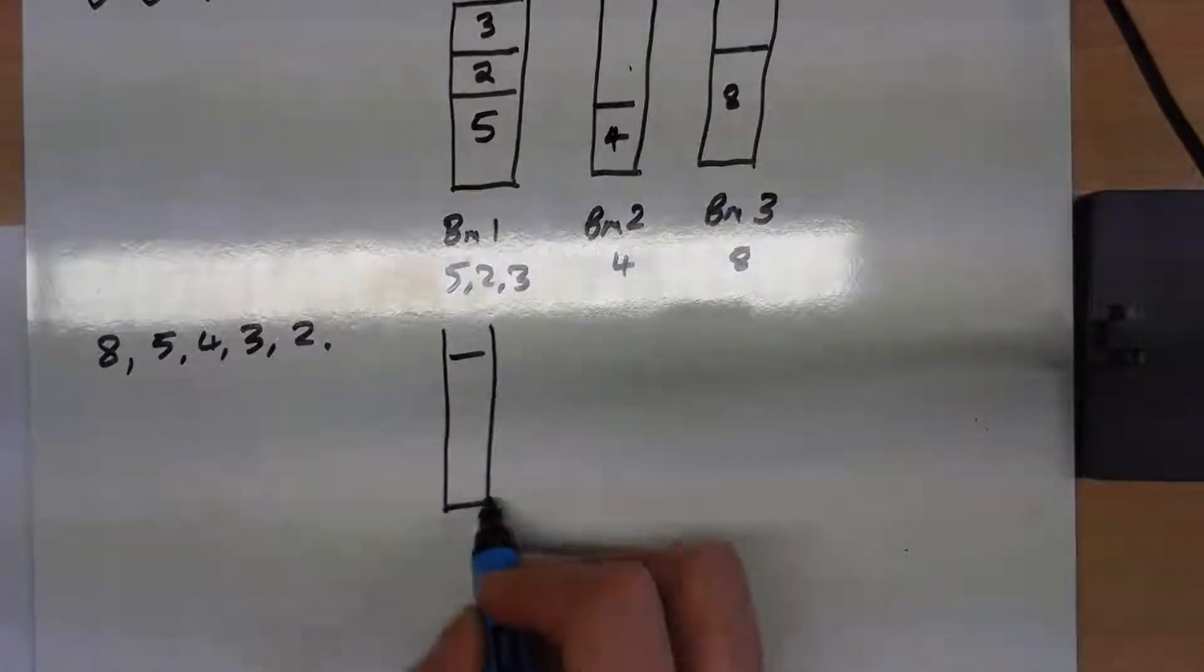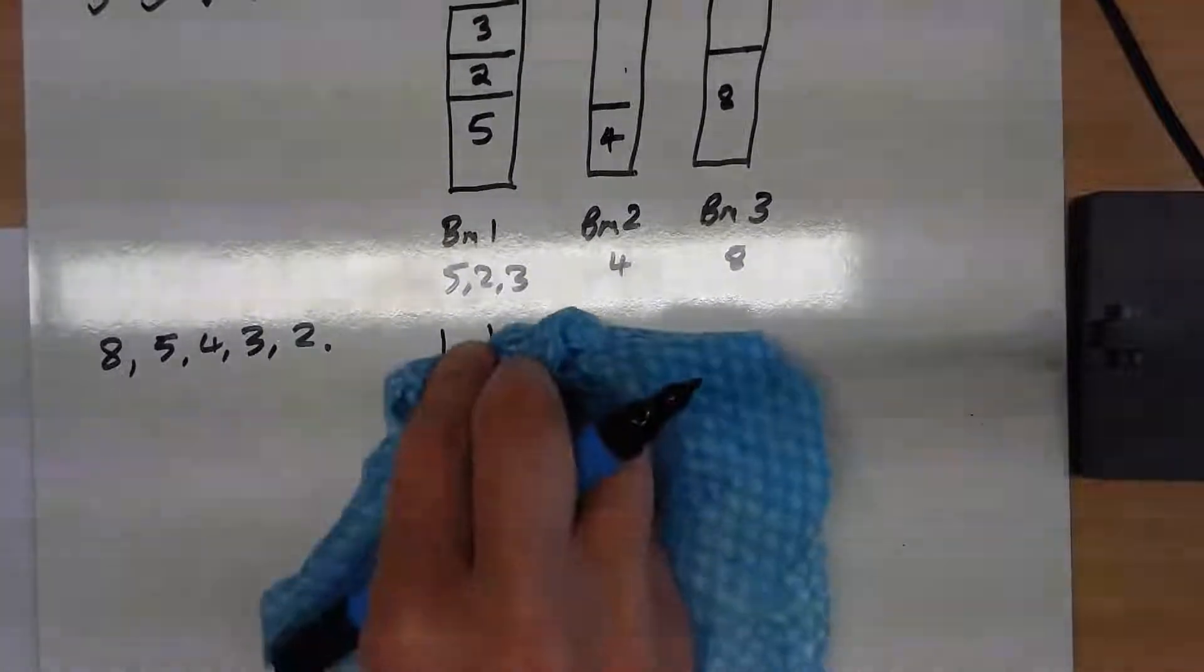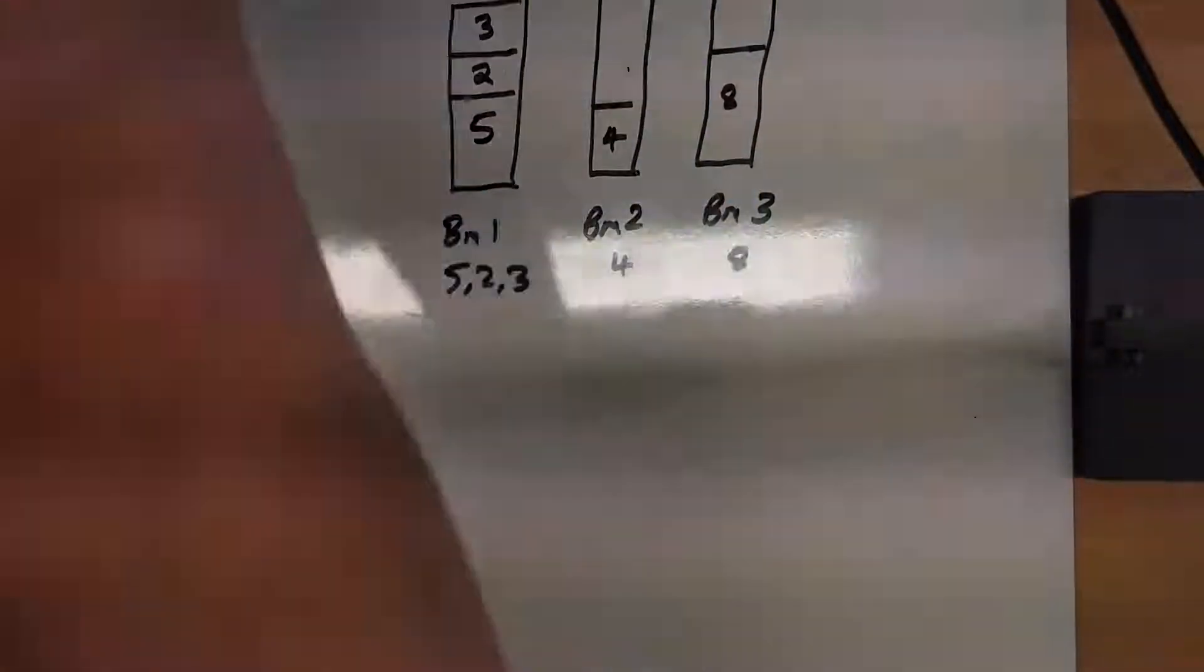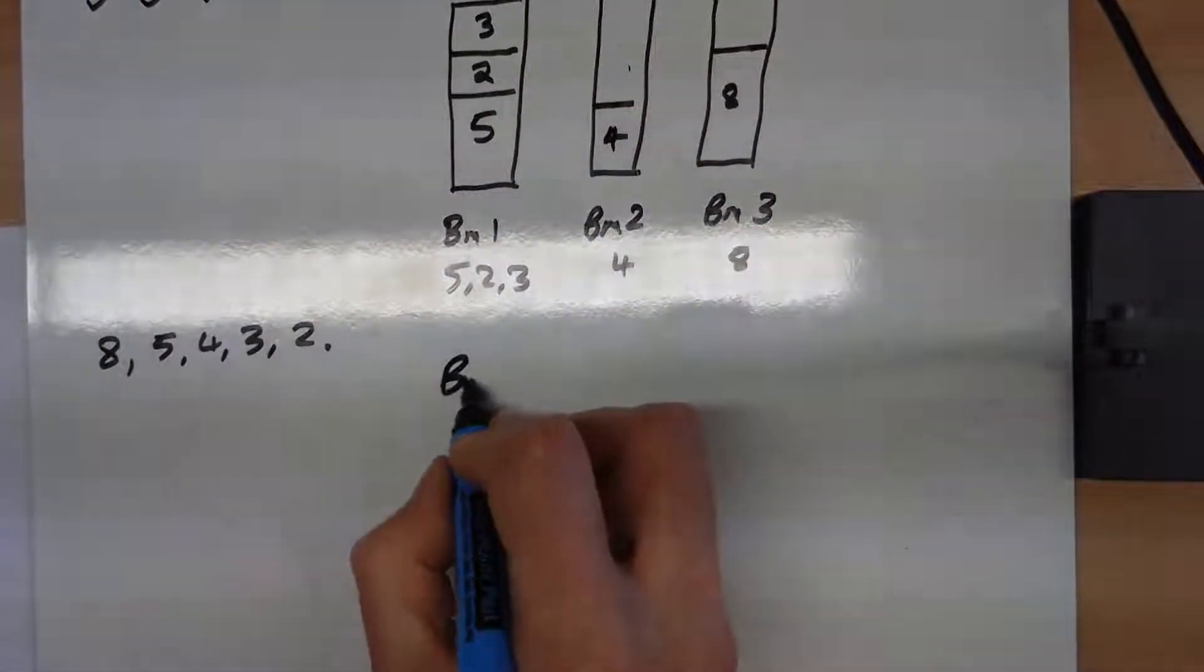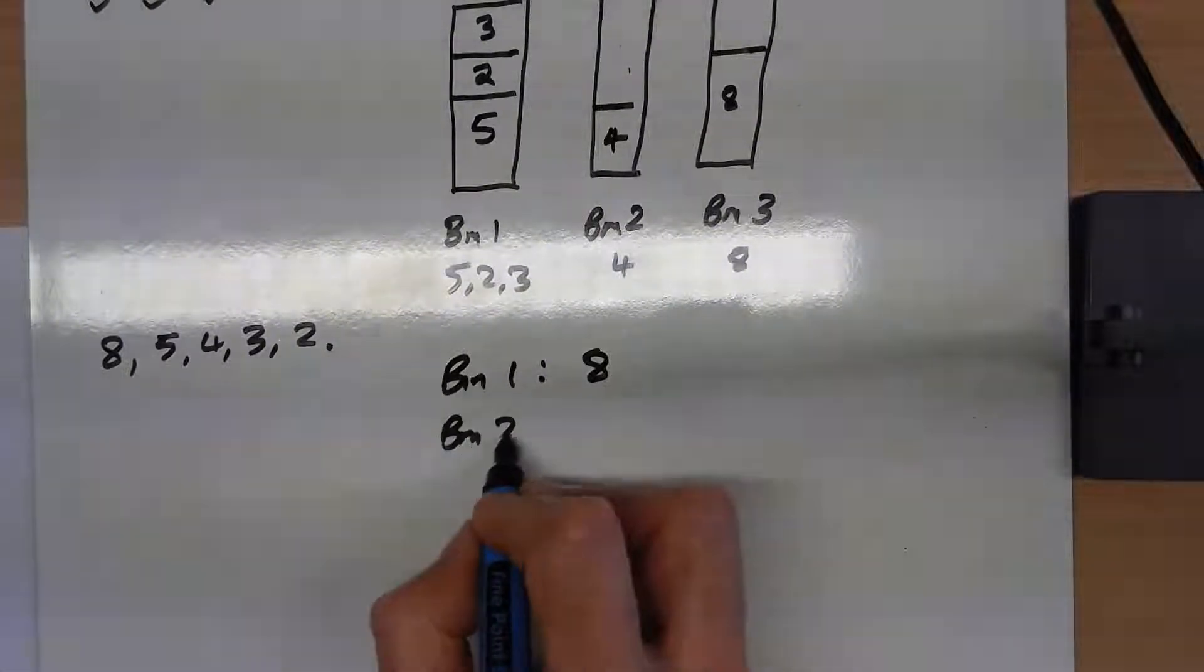This time you start with the 8 in bin 1. Actually, I'm not going to draw diagrams this time. So in bin 1, the 8 goes in, but the 5 won't fit.